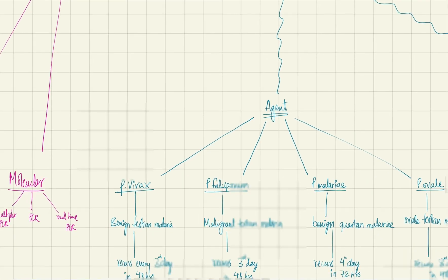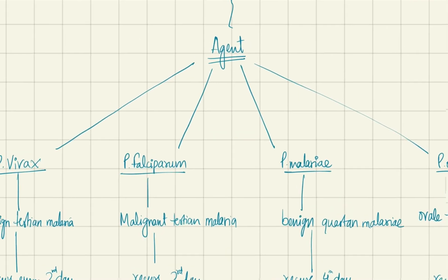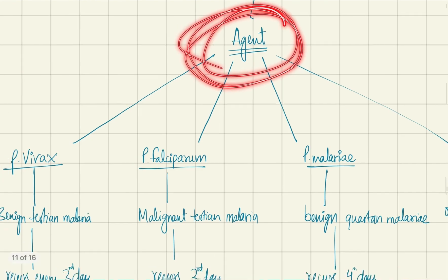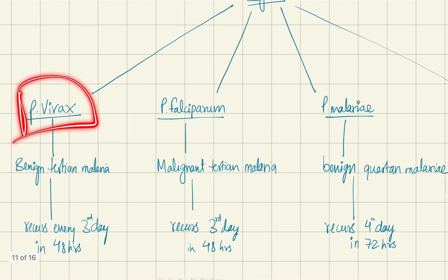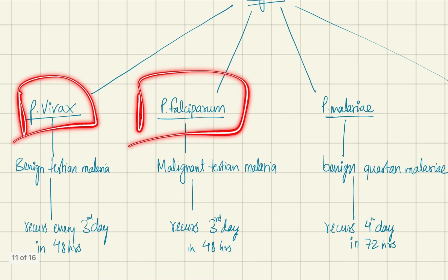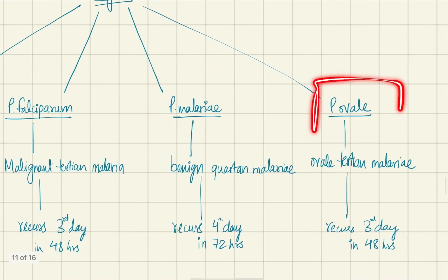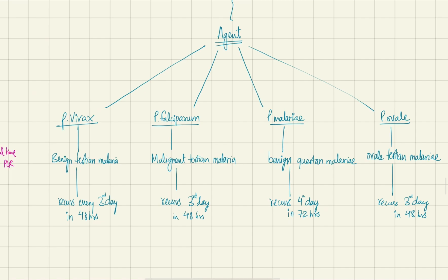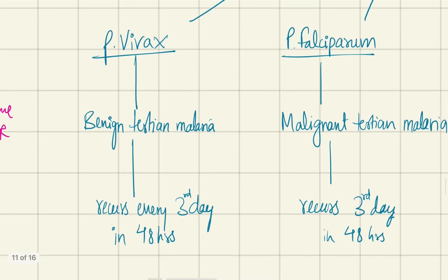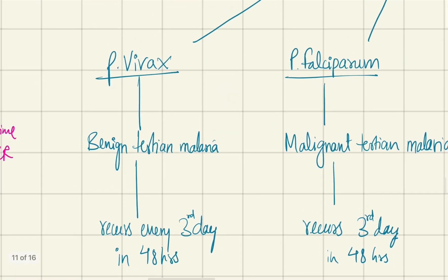Coming to the classification of the agents which cause malaria, we have Plasmodium vivax, Plasmodium falciparum, Plasmodium malariae, and Plasmodium ovale. These are the four types, and they also have alternate names which are very important because they denote the kind of fever and the days the fever will recur in.